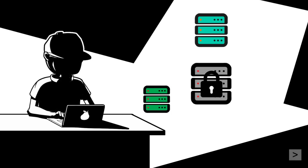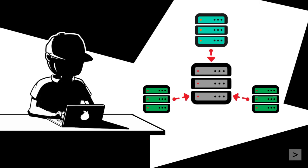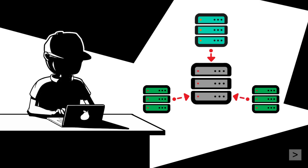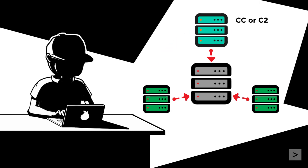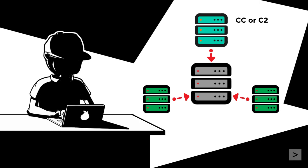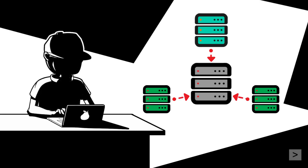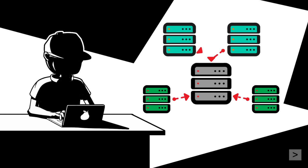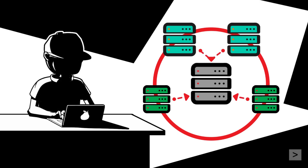Botnets are composed of infected devices, sometimes referred to as zombies, that have been hijacked by a malicious actor. Once infected, these devices can either phone home to a command and control server — or C2, also called C&C or CNC — or just wait for further instructions. Botnets can be controlled by a centralized C2 server, a tiered network of C2 servers, or even peer-to-peer (P2P) communication, to avoid making the C2 server a single point of failure.